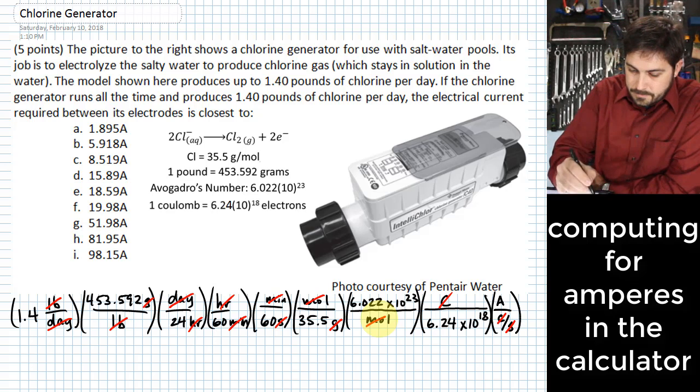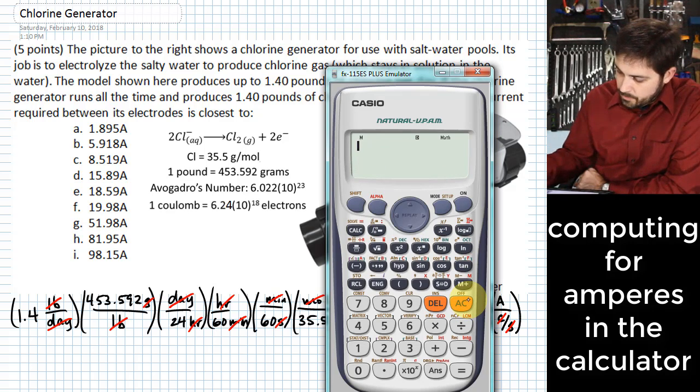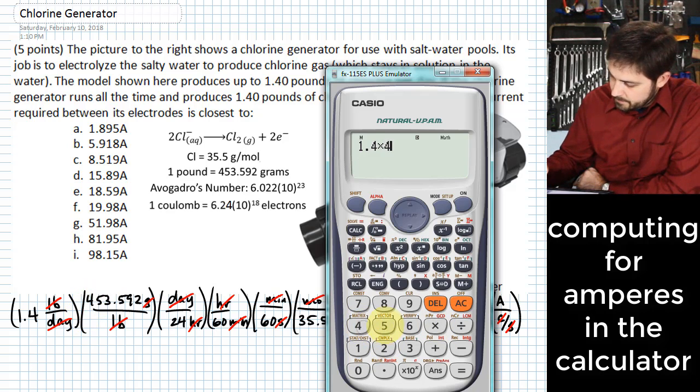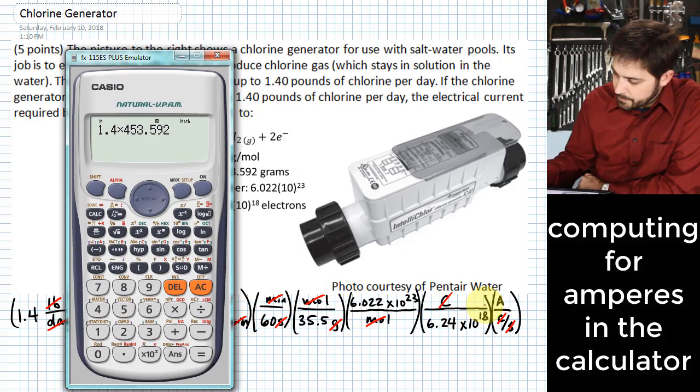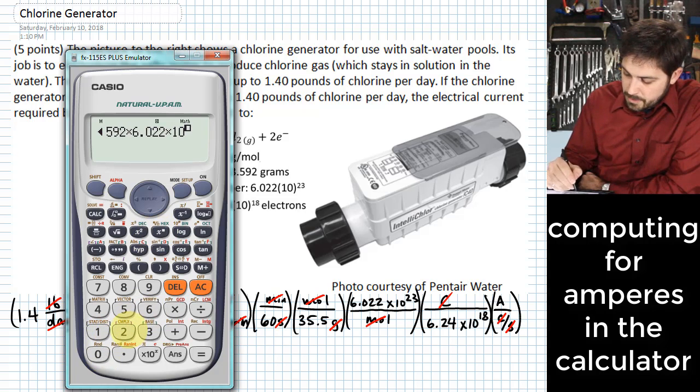So pulling up our calculator, what we will do is punch in 1.4 times 453.592, I'm going to deal with all of the terms in the numerator first, times 6.022 times 10 to the 23rd.